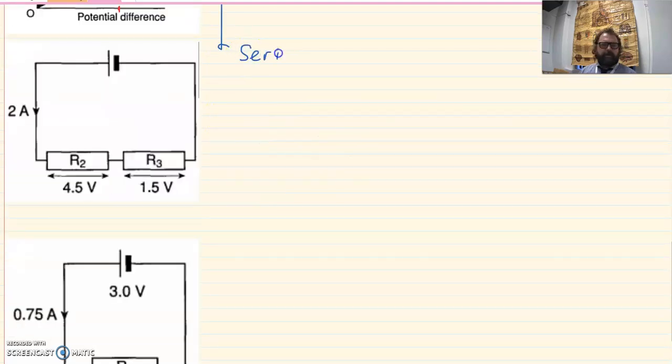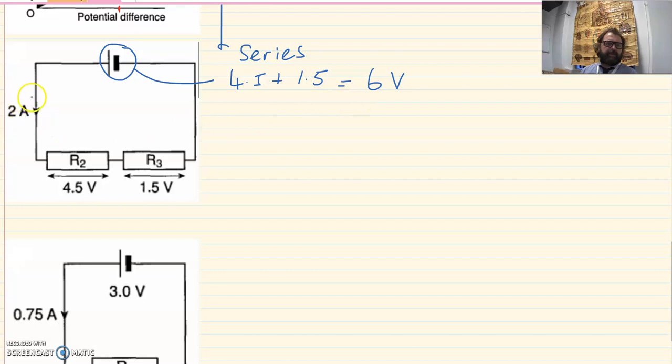Here we've got a series circuit showing two resistors, R2 and R3, connected in series with a cell. This cell must have a voltage of these two numbers added together because the voltage of the cell will be split between the battery, between the two resistors. So this is a six volt cell. It's producing a current of two amps. We know in a series circuit that this current will be the same everywhere. That means there's two amps of current flowing through this resistor and through this resistor.